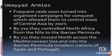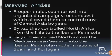Frequent raids soon turned into organized campaigns for conquest, which allowed them to control most of Central Asia by 710. By 710 they also controlled North Africa from the Nile to the Iberian Peninsula. By 711, they moved north across the Mediterranean Sea and into the Iberian Peninsula, which comprises the modern nations of Spain and Portugal.